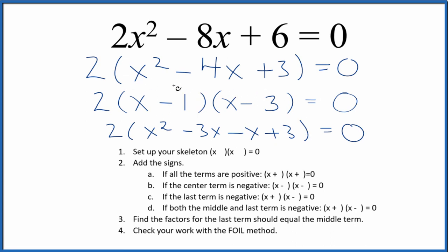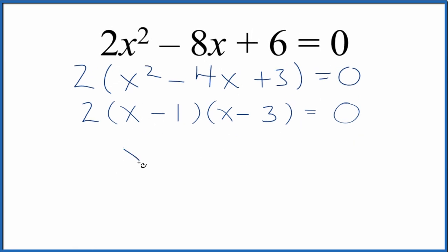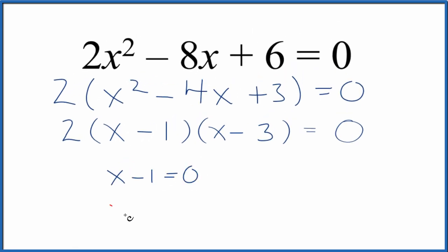Let's find the values for x that would make this statement equal 0. If x - 1 = 0, then x would equal 1, and if x - 3 = 0, then x would equal 3.